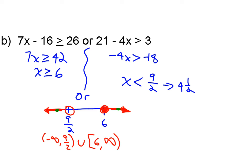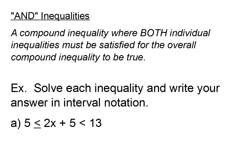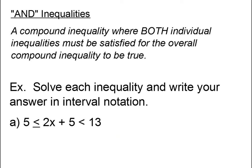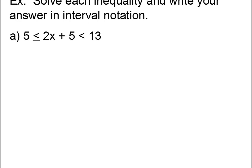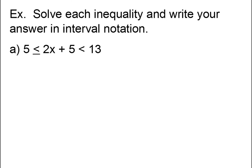Now let's take a look at the second type of compound inequality — and inequalities. These are compound inequalities where both individual inequalities must be satisfied for the overall compound inequality to be true. I want to solve: 5 is less than or equal to 2x plus 5, which is less than 13. This is an and scenario — I've got 5 is less than or equal to 2x plus 5, but at the same time 2x plus 5 has to be less than 13.